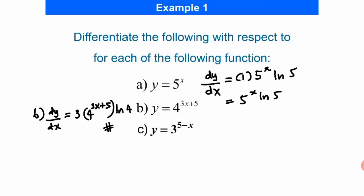And for question C, our dy/dx is: differentiate the power, we get negative 1, and then we copy back the question, and then we take ln of the base. So that is the answer.